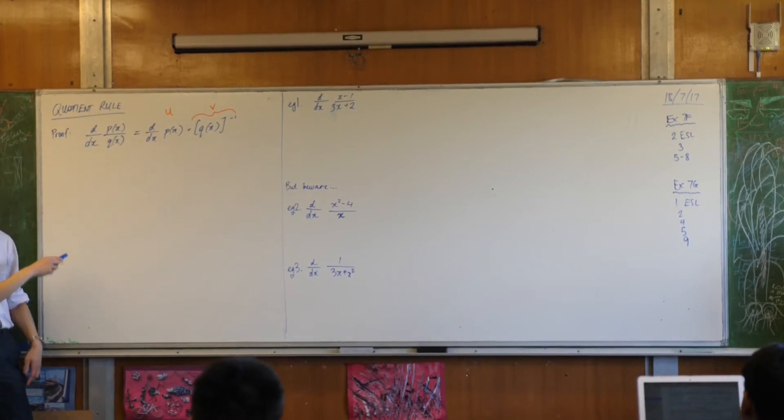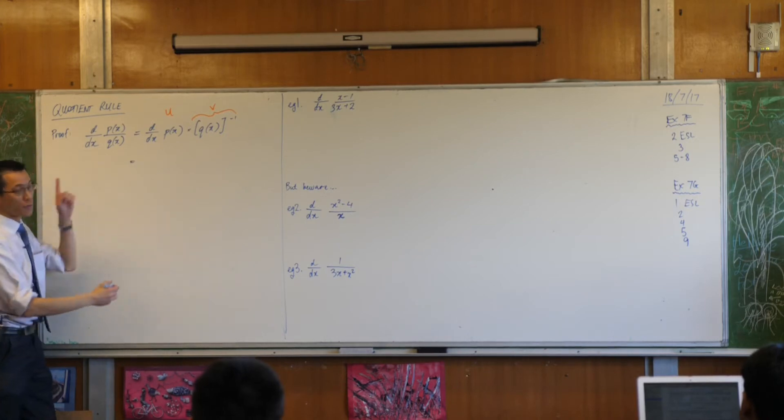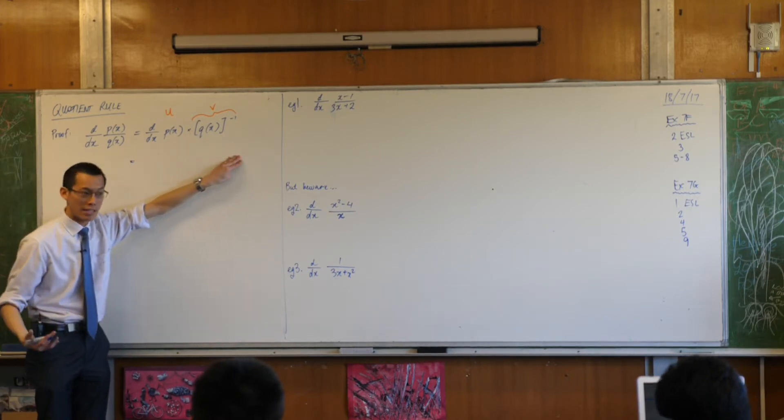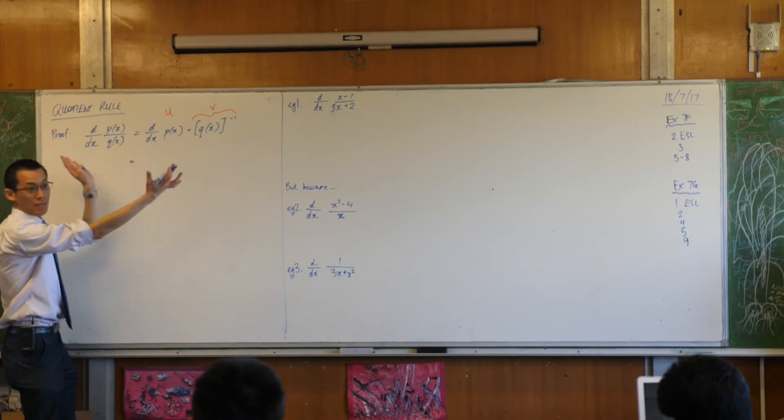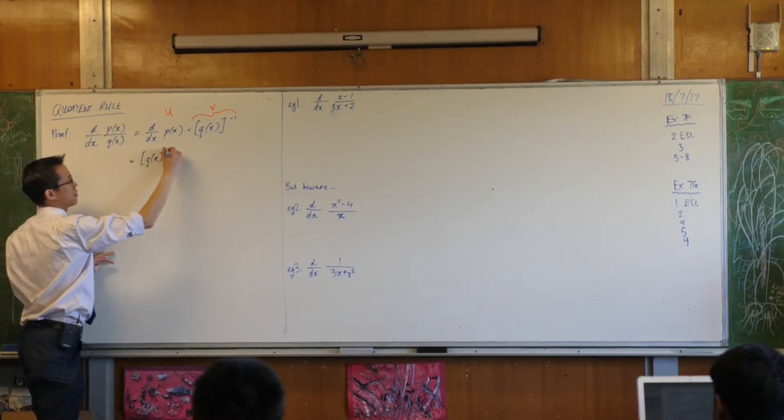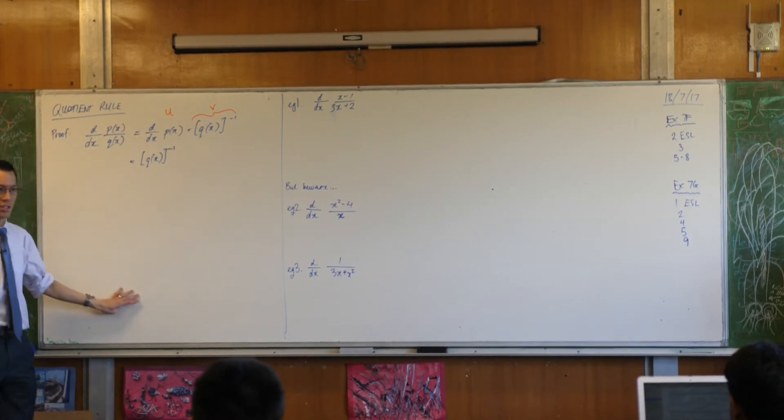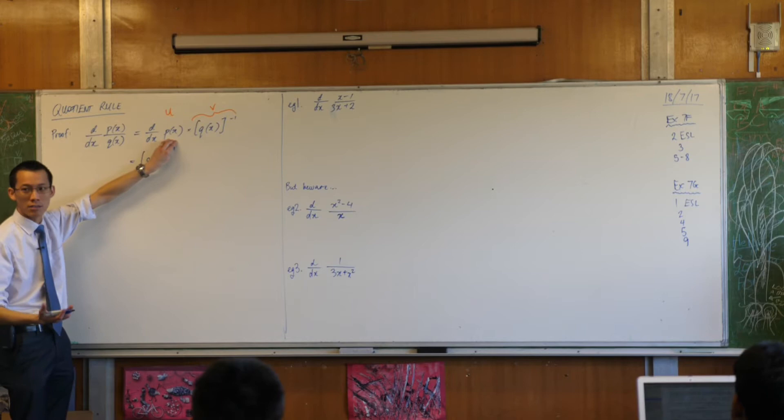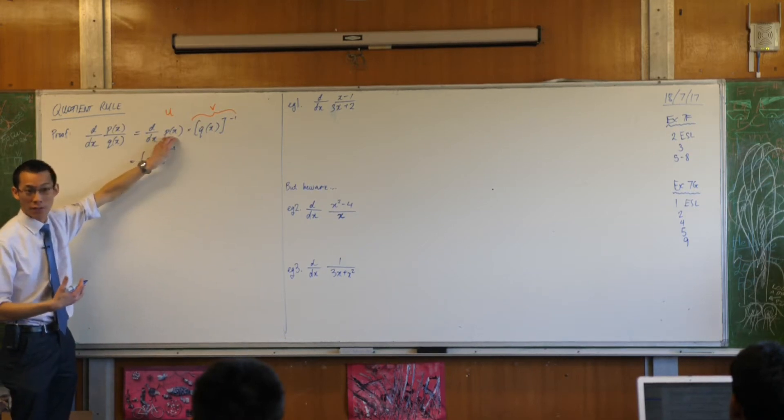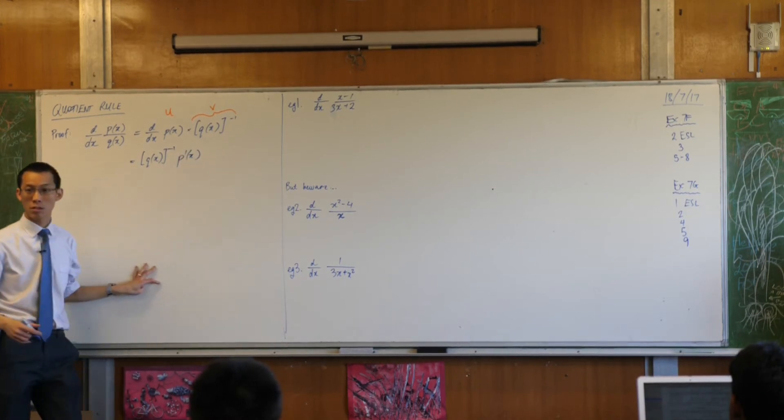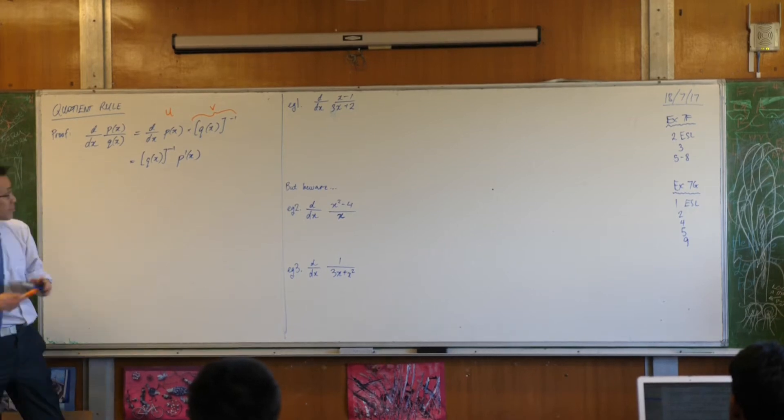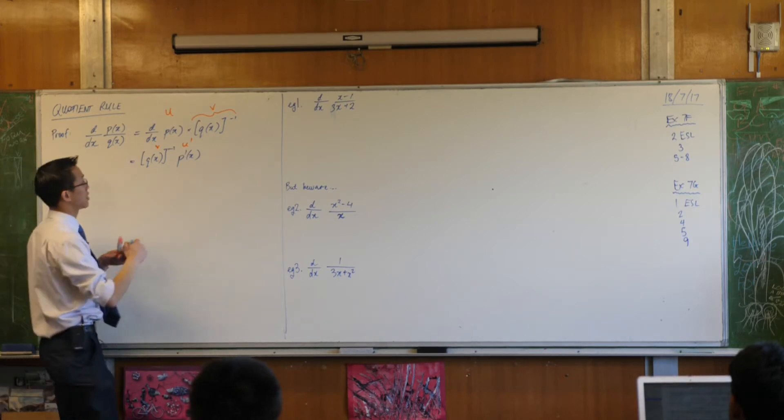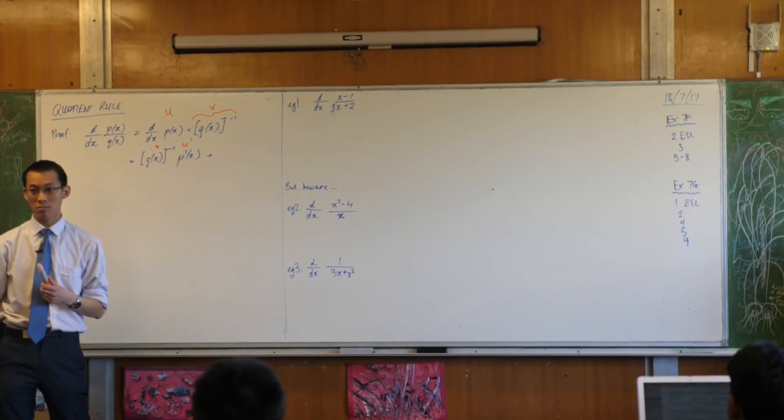So, this is a product now. So I can just treat this like a normal product. The derivative of a product is v u dash plus u v dash, yes? So let's walk through this one step at a time. v, I'm just going to write what v is. It's q of x to the power of negative 1. There's the v. What's u dash in this case? Well, it's the derivative of this thing with respect to x. I don't know what p is, but I know notation to define or to describe the derivative of p. I just write p dash. This is the v and u dash of the product rule.